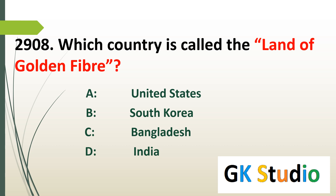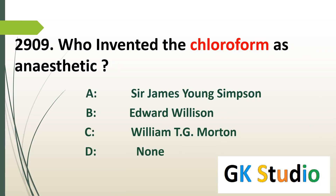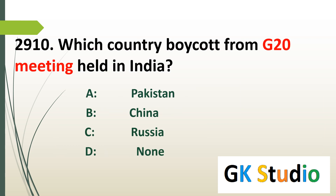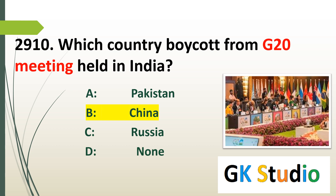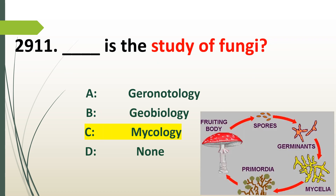Which country is known as the land of golden fiber? Bangladesh. Bangladesh is also called the land of golden fiber. Who invented chloroform as an anesthetic? T.G. Morton discovered chloroform as an anesthetic. Which country boycotted the G20 meeting held in India? China boycotted the G20 meeting held in India.